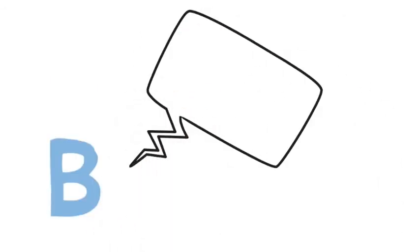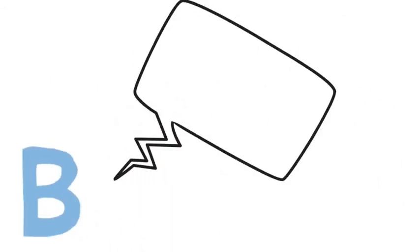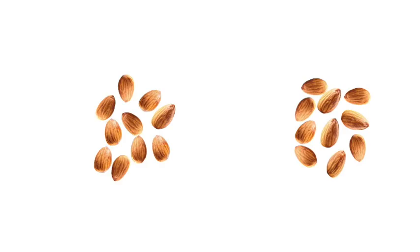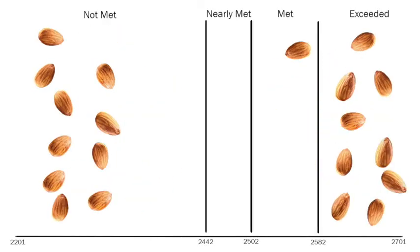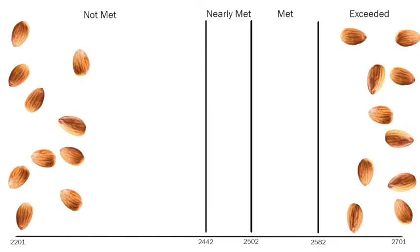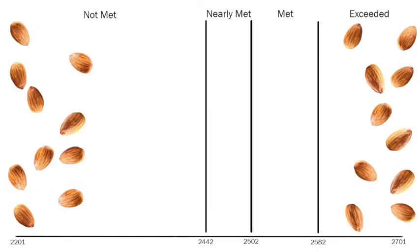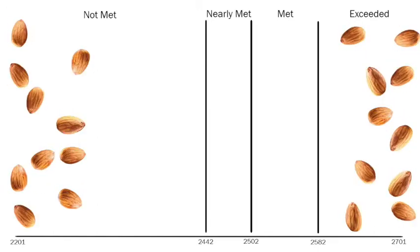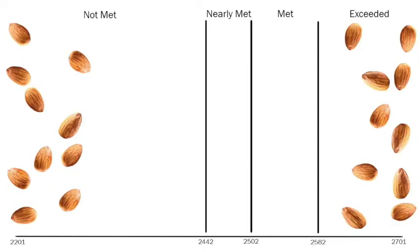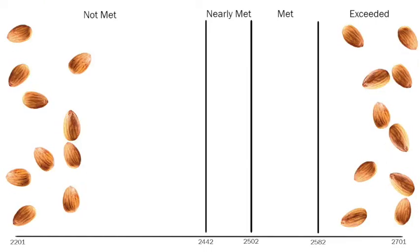Teacher B speaks up next. "Whoa there. Let's take a look at my class. I represented them with almonds. But you can see that they're all grouped at the top and the bottom. How am I supposed to teach students so far above and so far below grade level at the same time? It's like I'm teaching third grade and seventh grade all at once."